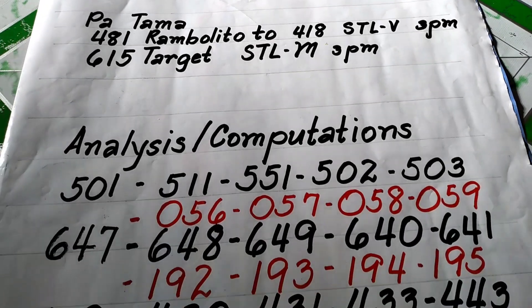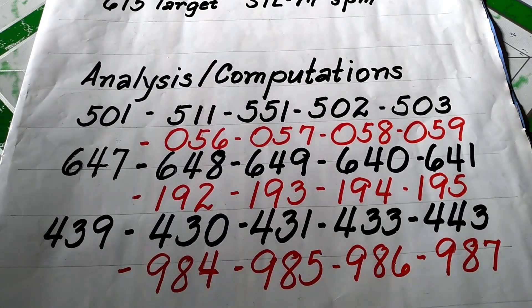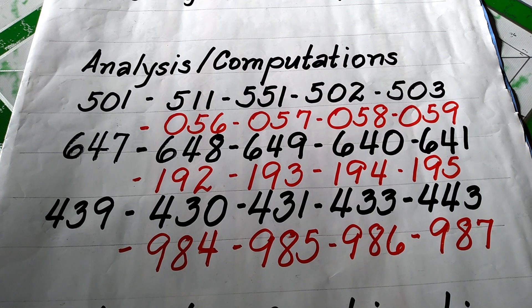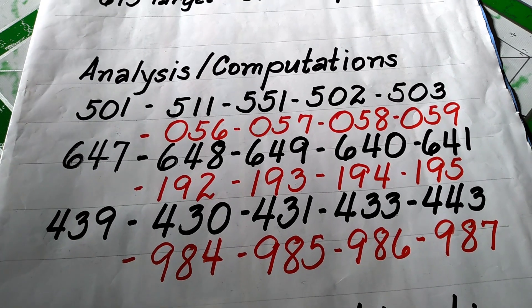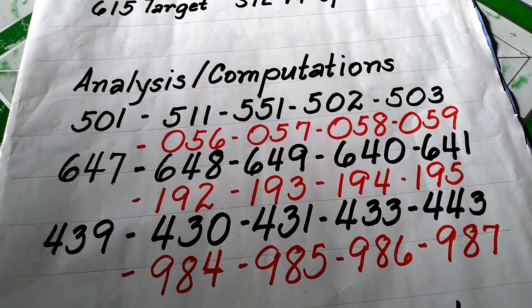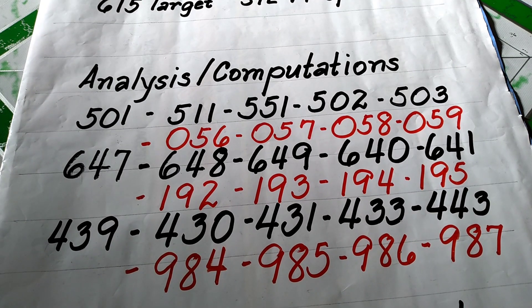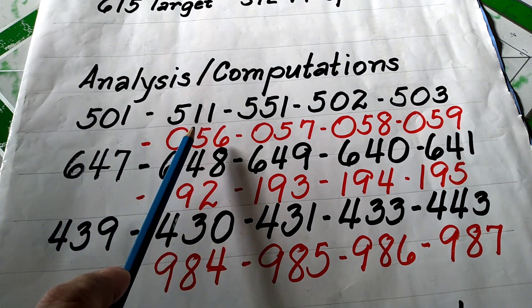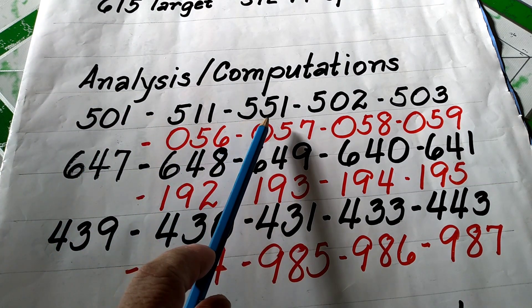Okay, so nandito na, ngayon, dito na tayo sa analysis o computations ayon sa 3D. So, una ay 501. Ang 501, ang mga kasunod ng 501, ito ay root number. So, maaring double, 511, 551.